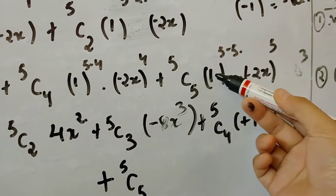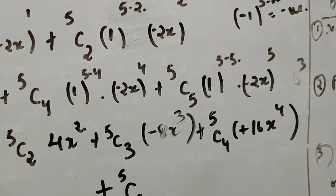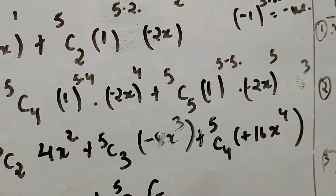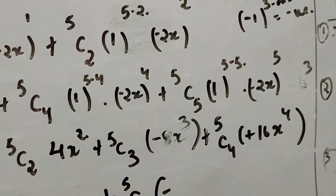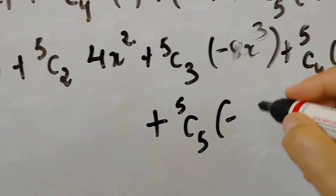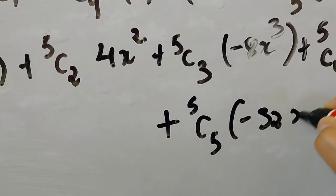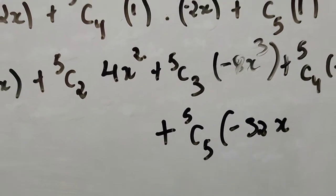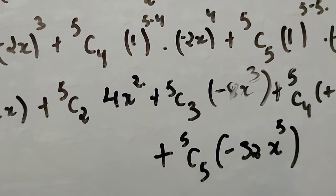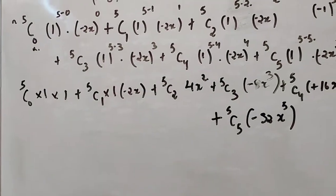For 5C5 with minus 2x to the power 5, the power is odd so the answer is negative: minus 32x to the power 5. So the full expansion is set up — I hope this is clear to you.